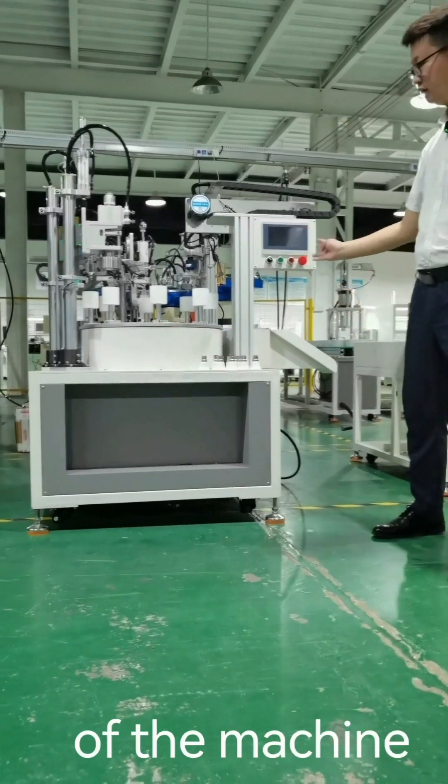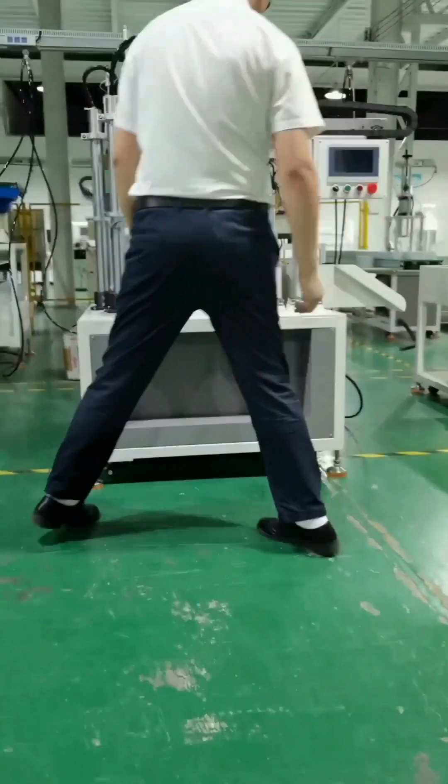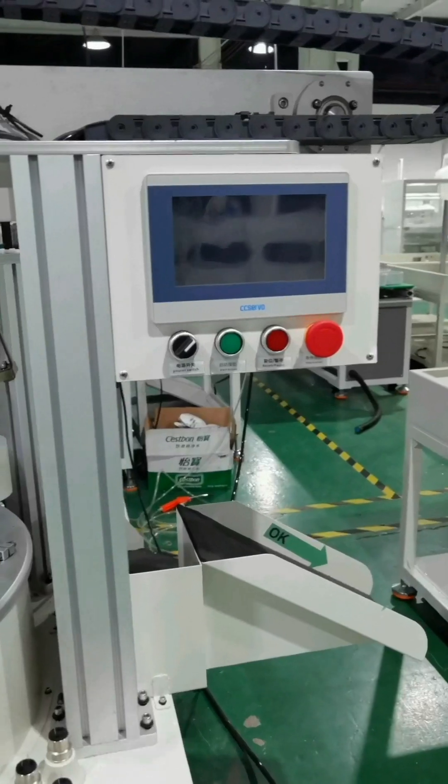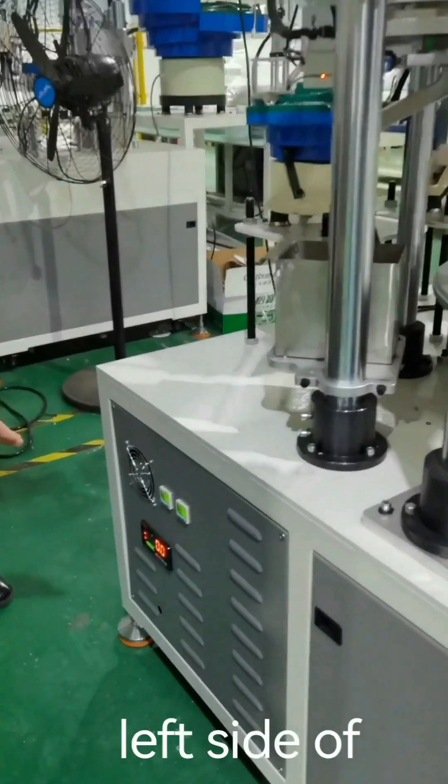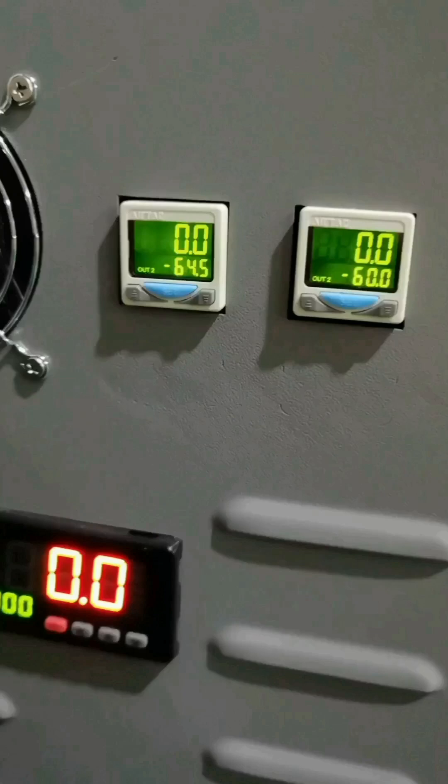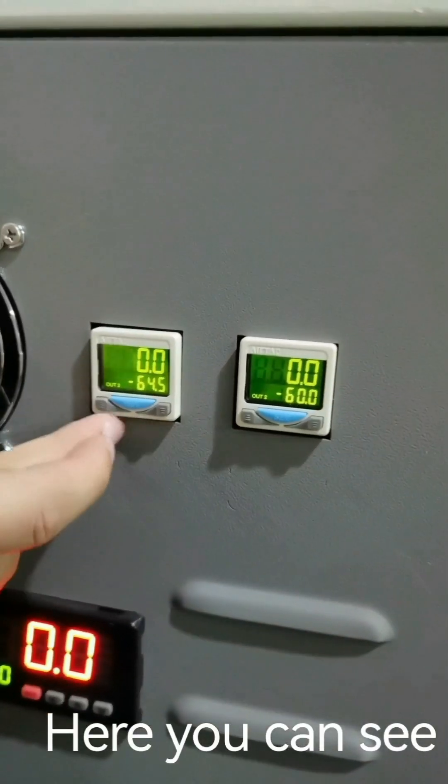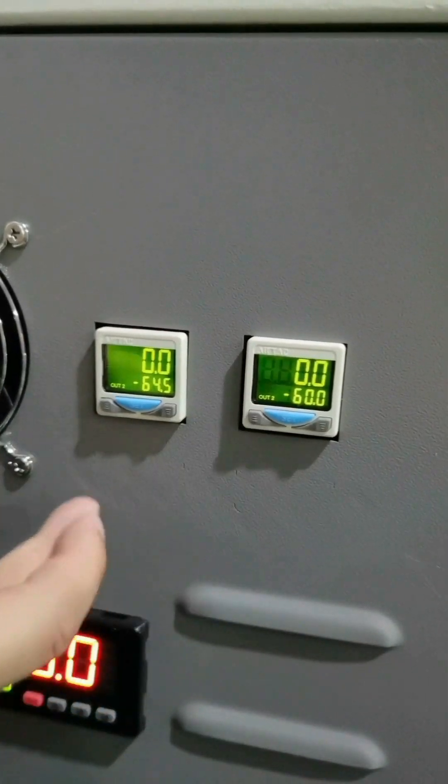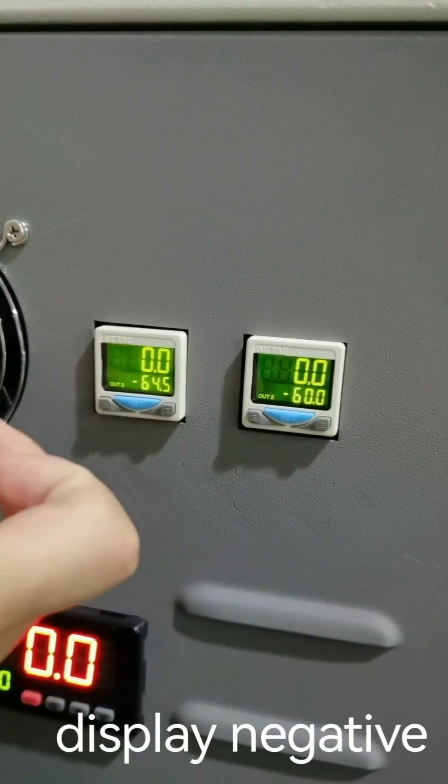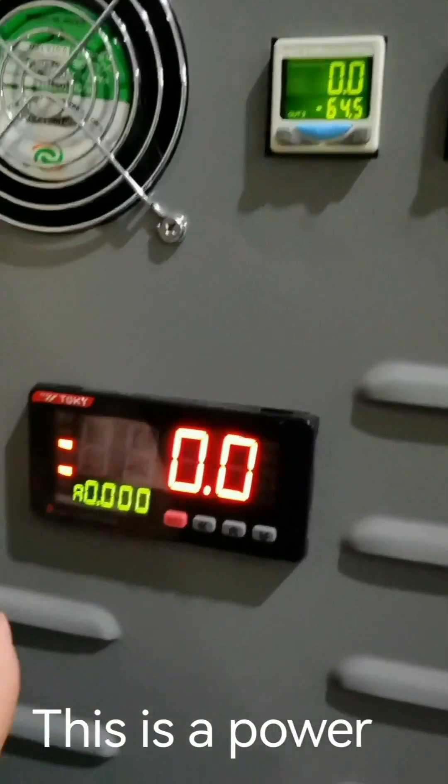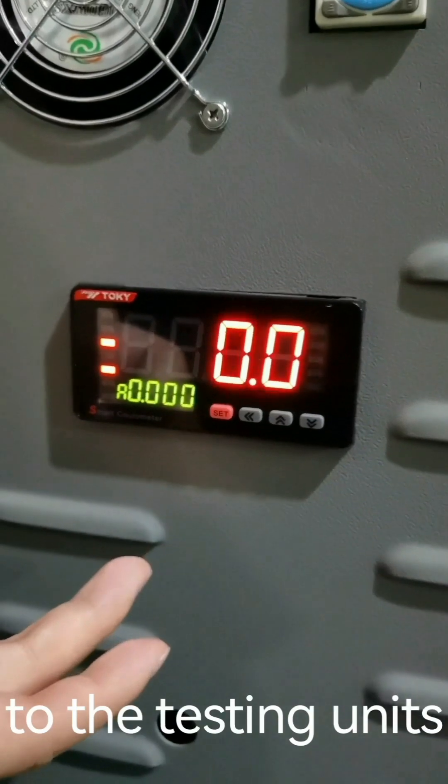See the front of the machine. Here is the console. Let's look at the left side of the machine. Here you can see the gas pressure meters. These two meters display negative air pressure. This is the power meter that connects to the testing unit.